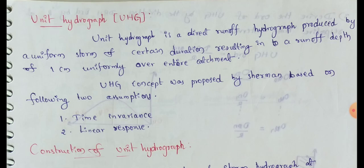This 1cm depth is a constant runoff depth. Let's look at Unit Hydrograph. This is 1 unit equal to 1cm.